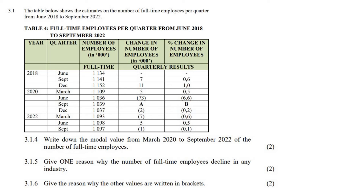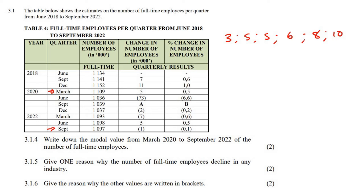This question says write down the modal value from March 2020 all the way to September 2022. The modal value is just the number that appears the most often. Looking at the data, there is no number that appears more than once in that range. For example, the mode of 3, 5, 5, 6, 8, 10 would be 5 because it appears twice — but here no value repeats. So there is no modal value.